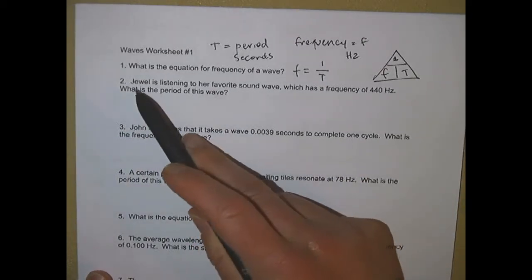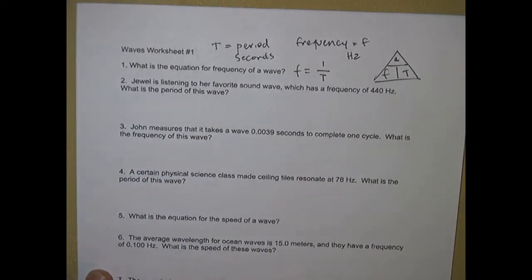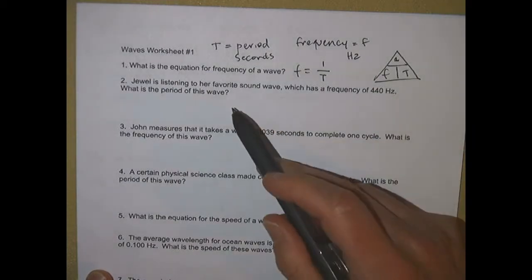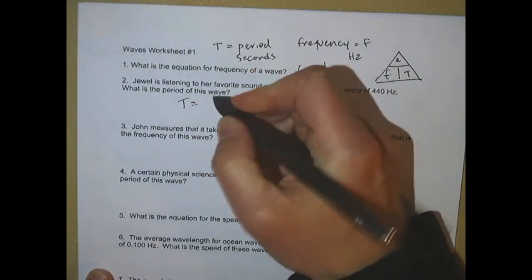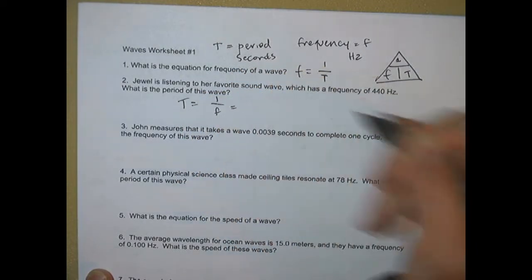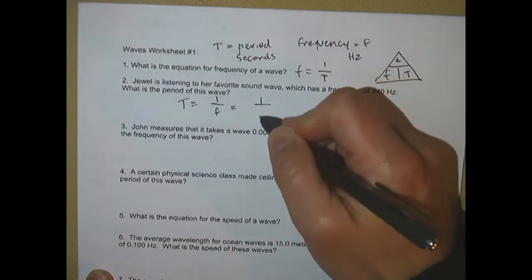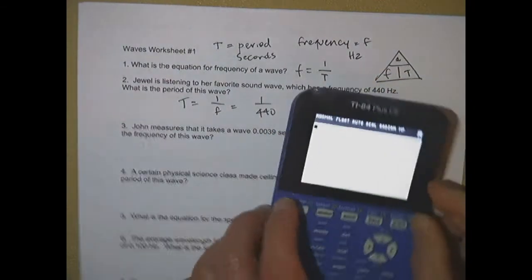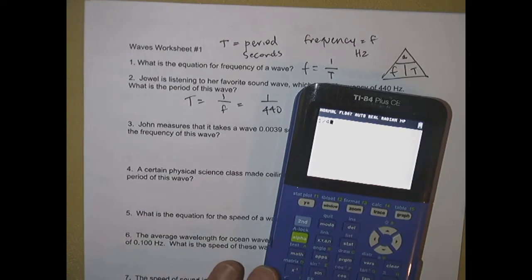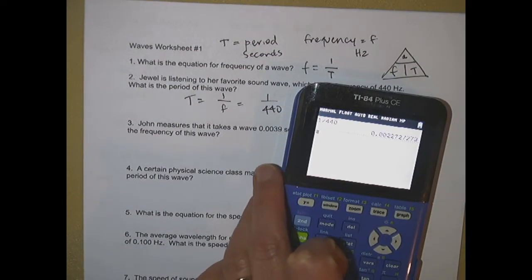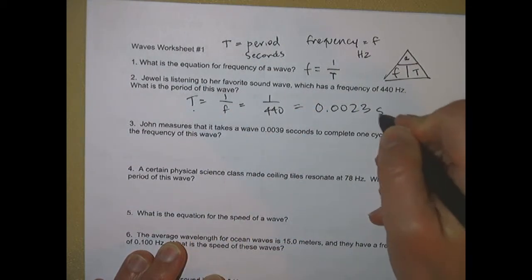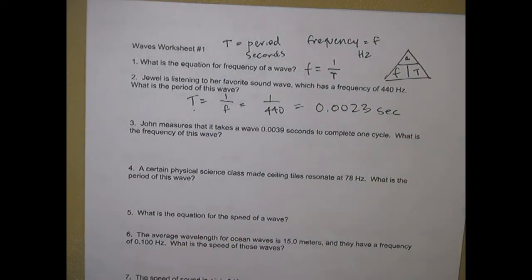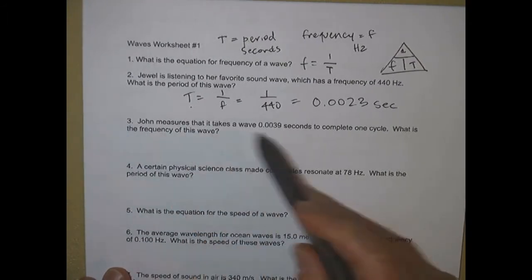If someone named Jewel is listening to her favorite sound wave which has a frequency of 440 Hertz, what is the period of this wave? Cover up period in the triangle: period equals one over frequency. Plug in the numbers — one over 440 Hertz. On your calculator, one divided by 440 gives you about 0.0023. Period is measured in seconds.